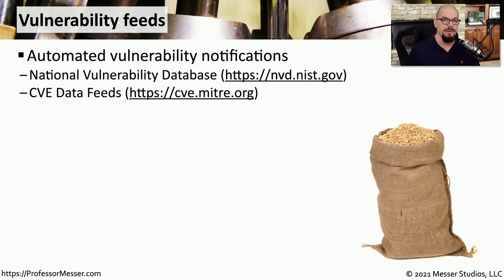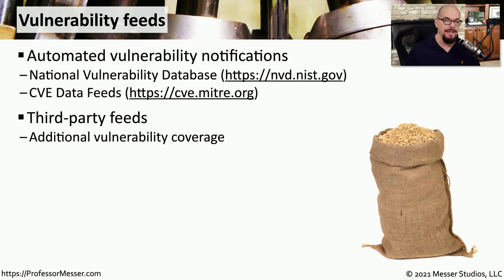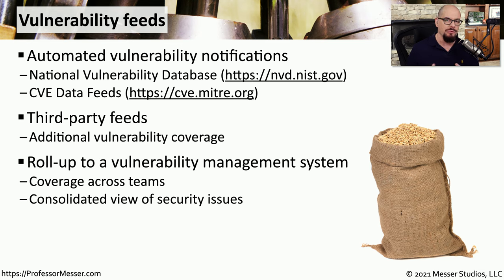The National Institute of Standards and Technology maintains a comprehensive database of vulnerabilities called the National Vulnerability Database. It keeps within that database a list of CVEs, or Common Vulnerabilities and Exposures. It's common to supplement this database with third-party feeds from other organizations. You might roll up all of those vulnerability feeds into one central vulnerability management system, allowing you to track all the latest vulnerabilities, identify vulnerabilities specific to your environment, and be informed immediately when a vulnerability is disclosed.